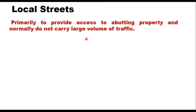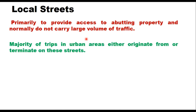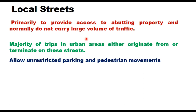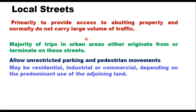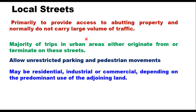Local streets are primarily intended to provide access to abutting property and normally do not carry large volumes of traffic. The majority of trips in urban areas either originate from or terminate on these streets. They allow unrestricted parking and pedestrian movements, and may be residential, industrial, or commercial depending upon the predominant use of adjoining land.